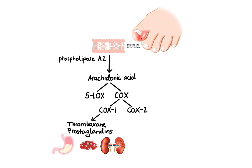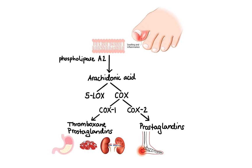On the other hand, COX-2 isoform is not expressed constantly in most tissues, but instead it is induced at sites of inflammation. So unlike COX-1, COX-2-derived prostaglandins mediate mainly inflammation, pain, and fever.